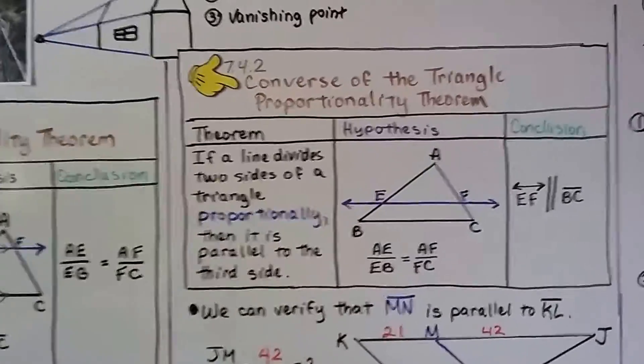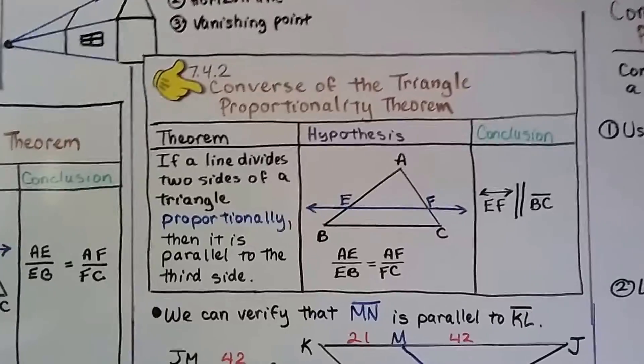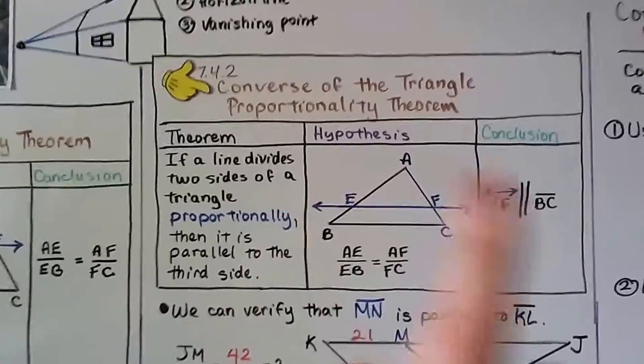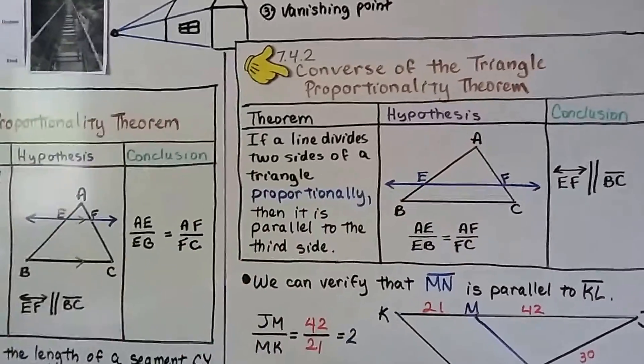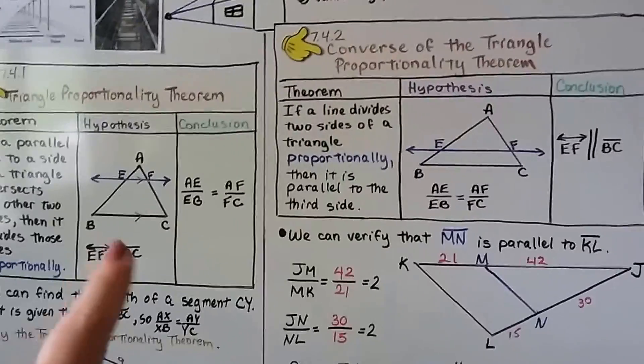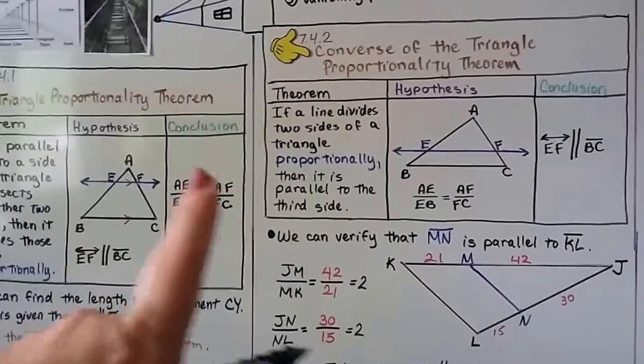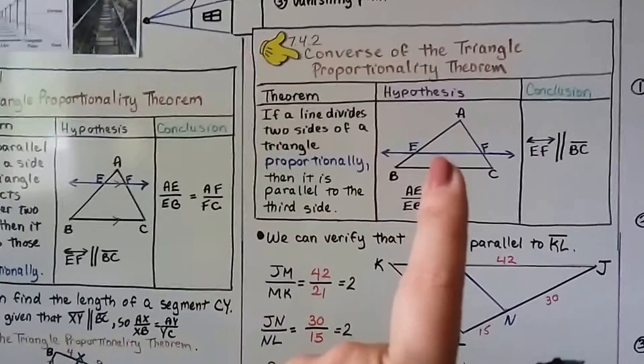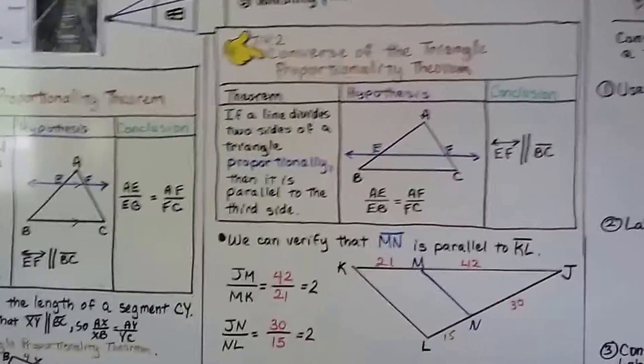Now, the converse of the triangle proportionality theorem, if you remember, a converse swaps the hypothesis and the conclusion of the other theorem. So this one said because these lines are parallel, then they're proportional. This one's going to say because they're proportional, the lines are parallel.